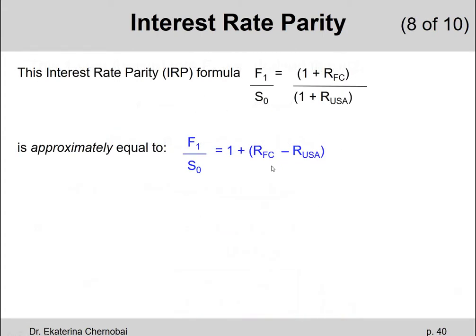Let's do a little bit more rearrangement to this formula. Let's take this formula, the Interest Rate Parity formula, and write an approximate version of it where the right-hand side is simplified to 1 plus the difference between the foreign and the domestic risk-free rates.